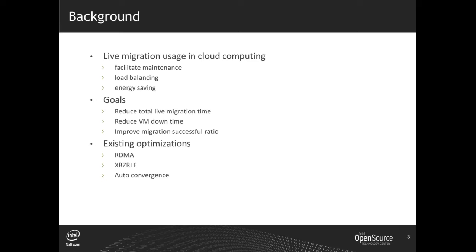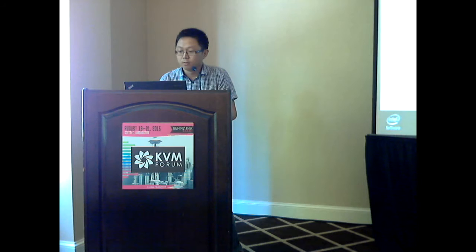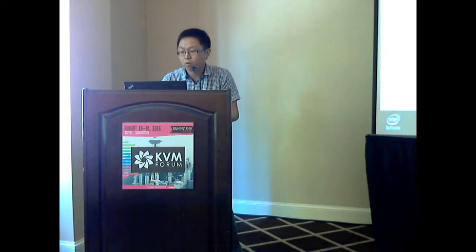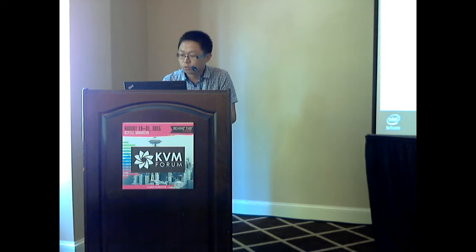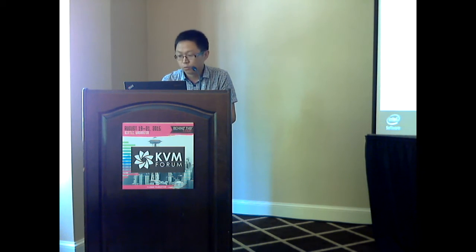Live migration plays an important role in cloud computing. It can be used for facilitating maintenance, load balancing, and energy saving. The main optimization goals are to reduce the total live migration time, reduce the VM downtime, and improve the live migration success ratio. QEMU and KVM have already implemented some mechanisms for optimization, such as using RDMA to accelerate data transmission, XBZRLE to reduce data traffic, and an auto-convergence mechanism to improve the live migration success ratio. But it's not enough.